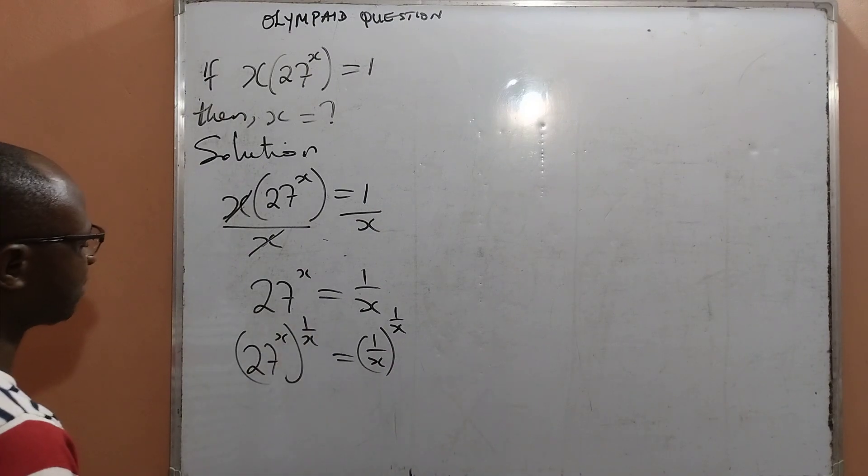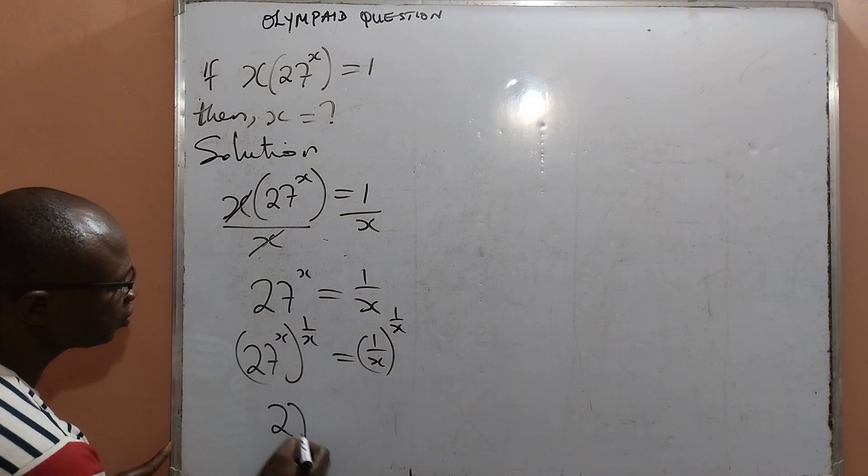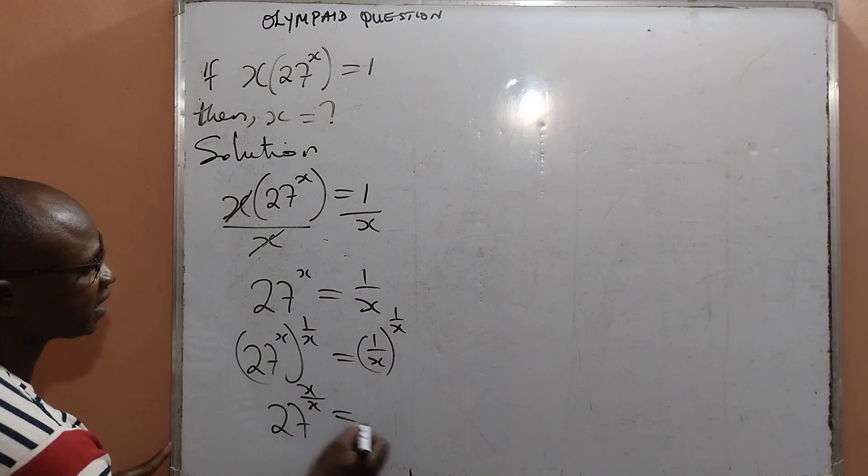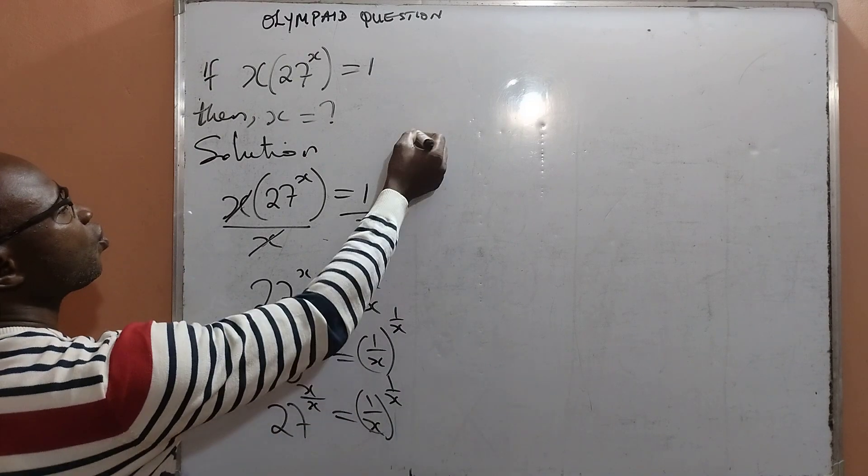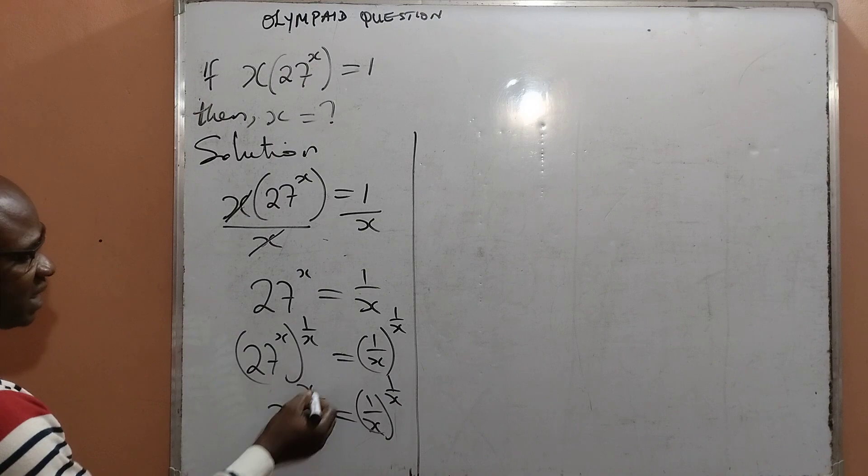And from this, by law of exponents, x will multiply 1 all over x, and that will give me 27 to the power of x all over x equal to 1 all over x to the power of 1 all over x. So x can cancel out x.